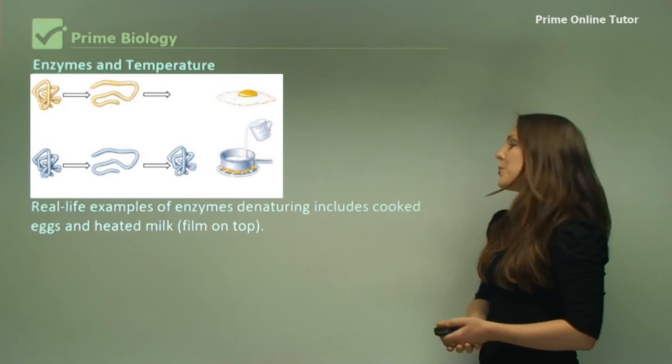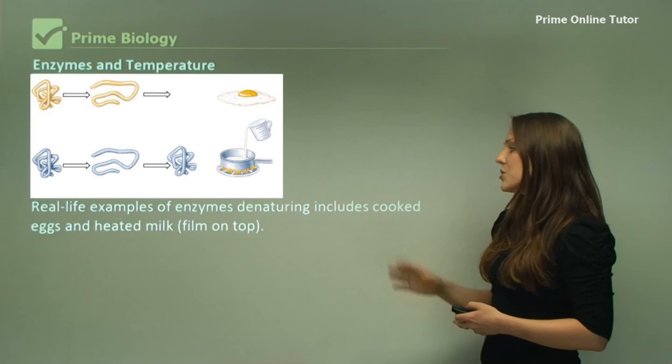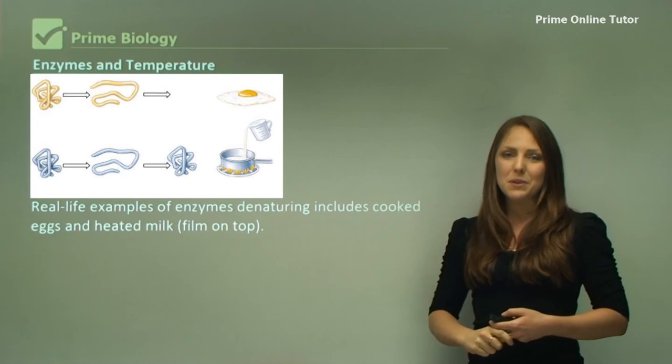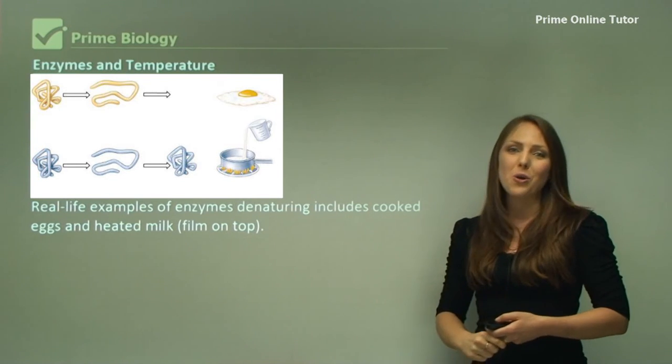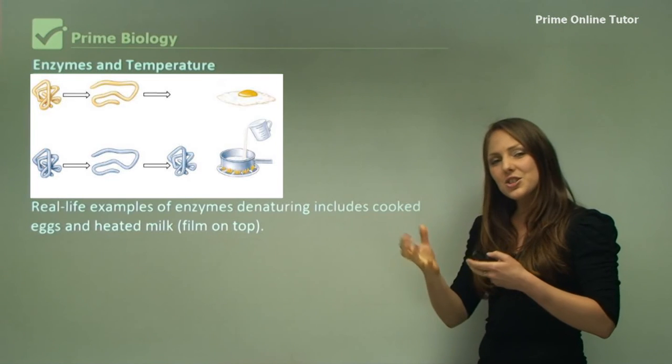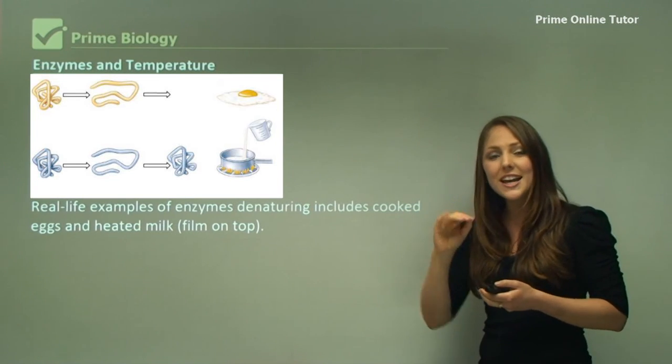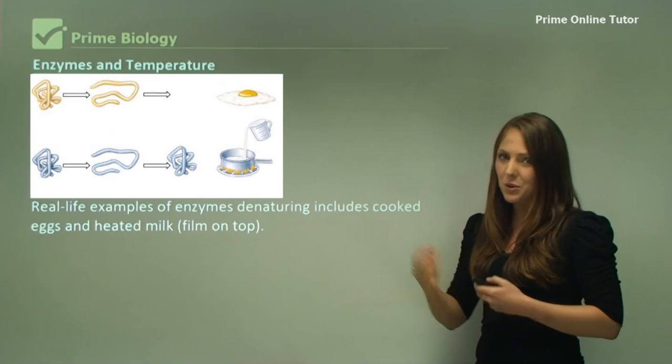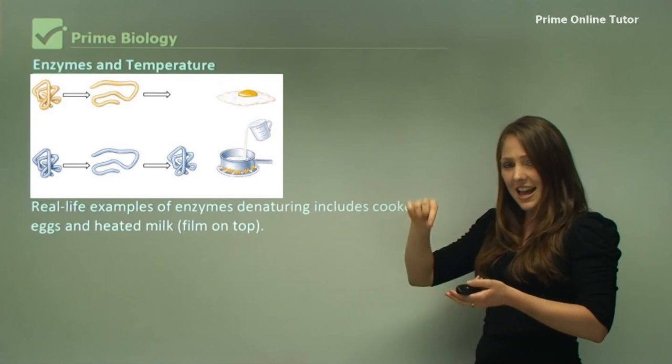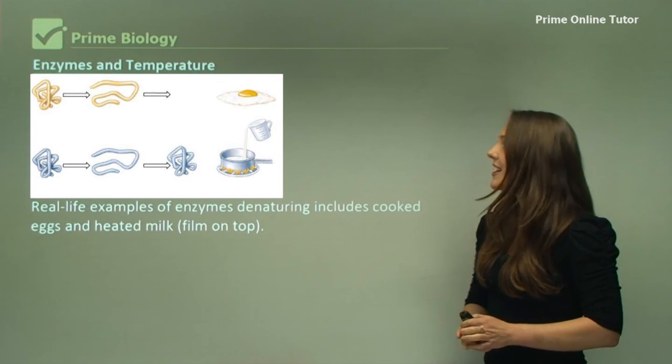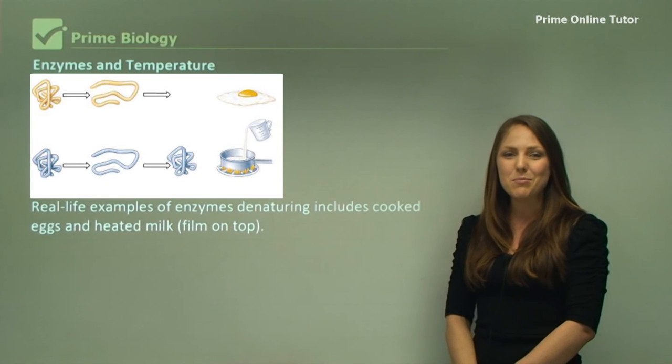Real life examples of denaturing includes cooked eggs and heated meat with milk with film on top. So that film that actually collects on top of milk is denatured protein. When you take your milk out of the microwave and it has that film it's actually protein denatured. Thank you that's it with enzymes and temperature.